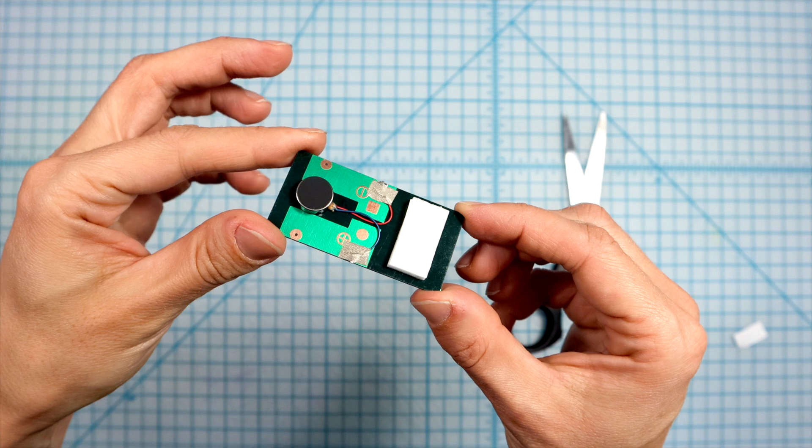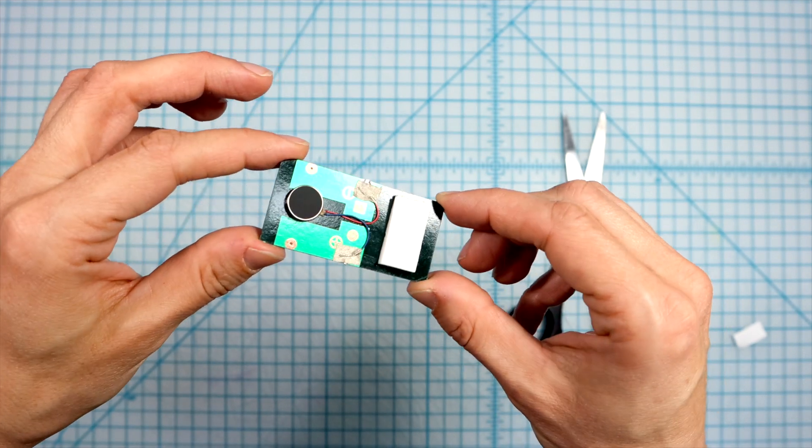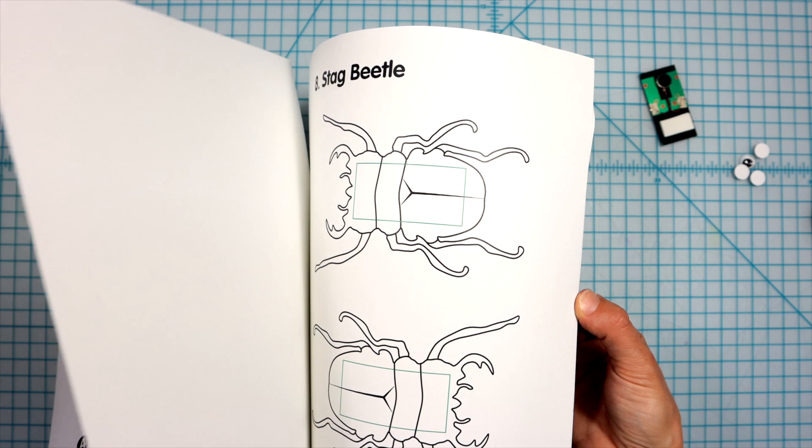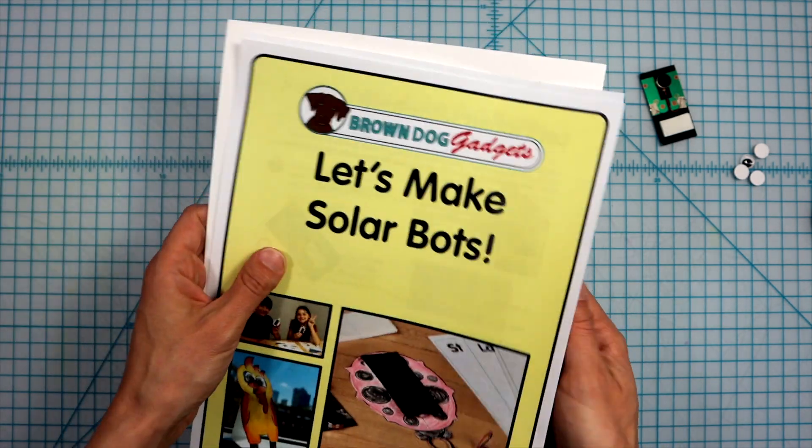Now that you've made the base, it's time to choose a body for your project. Look through the e-book to find a bot base that you'd like to make. Choose from many different bugs or animals.